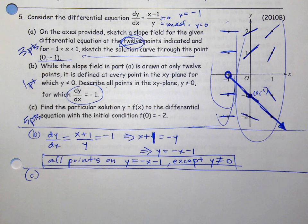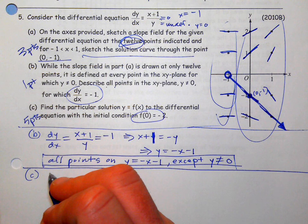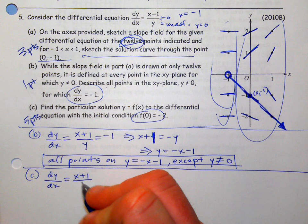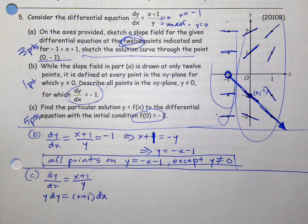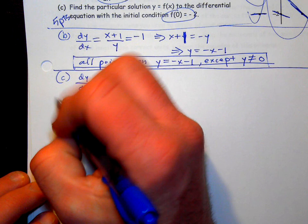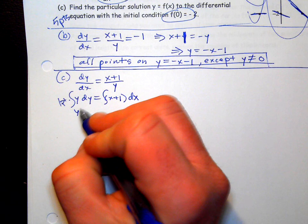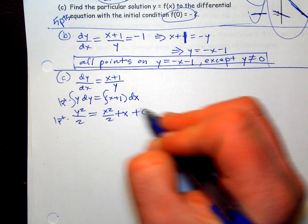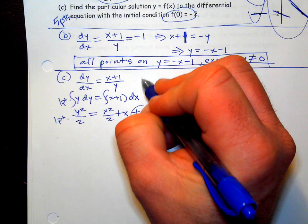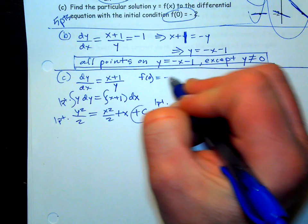Part (c) is five points, so you'll be finding the particular solution with the initial condition — undoing the differential equation to get the original. To earn any of those five points, you must successfully separate variables: x with dx, y with dy, using multiplication and division to separate sides. That's one point. If you don't do it, you get zero out of five. Then integrate both sides to get y²/2 = x²/2 + x + C — one point for antiderivatives, one for the +C, and another for finding C.